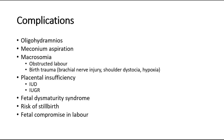Macrosomia, which means a big-sized baby, can cause obstructed labor and also birth trauma, such as brachial nerve injury, shoulder dystocia, and hypoxia of the baby.